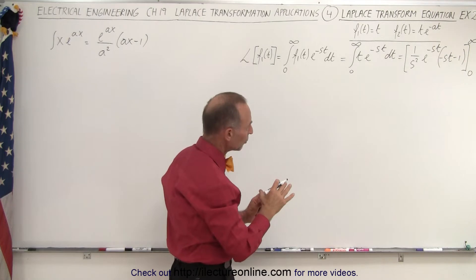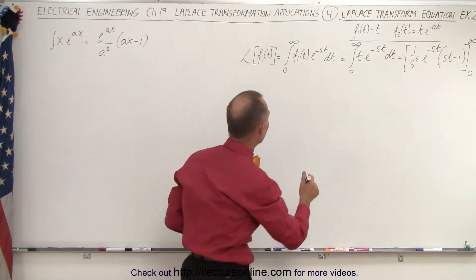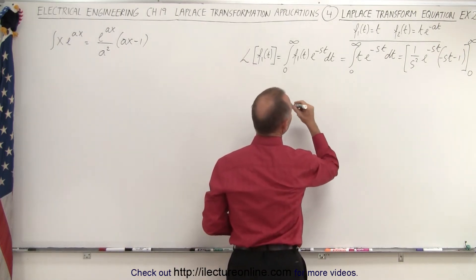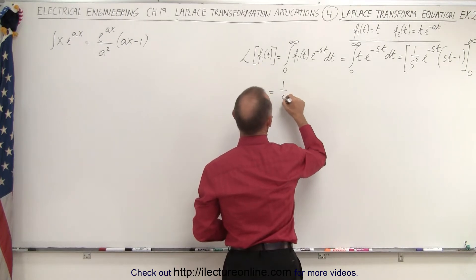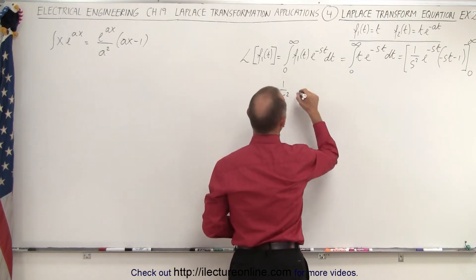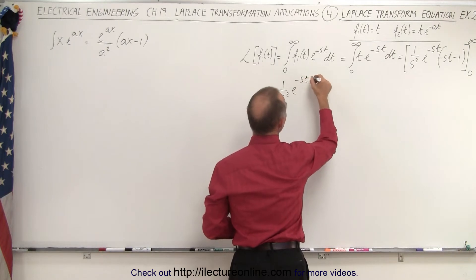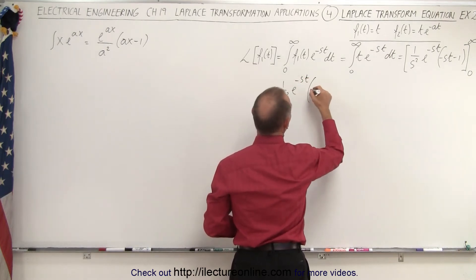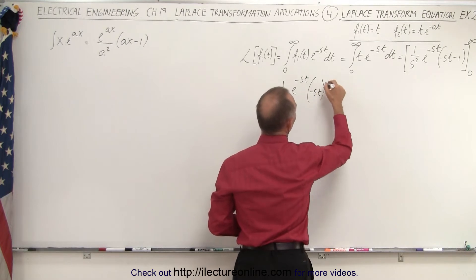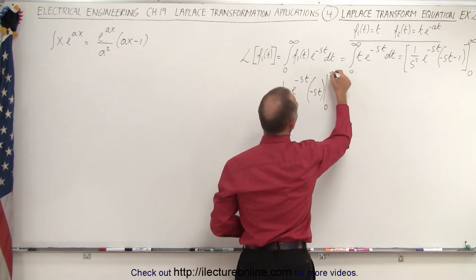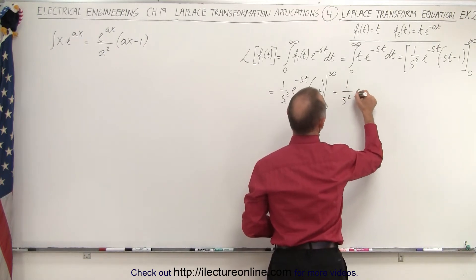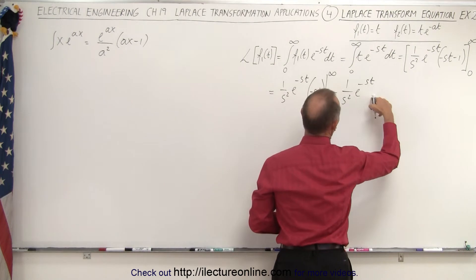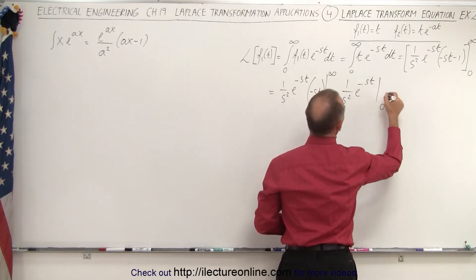We're going to do that in two steps. This equals one over s squared times e to the minus st times minus st, evaluated from zero to infinity, minus one over s squared times e to the minus st times minus one, evaluated from zero to infinity.